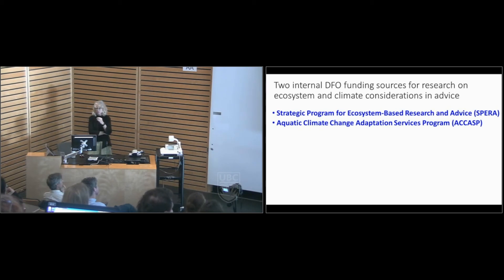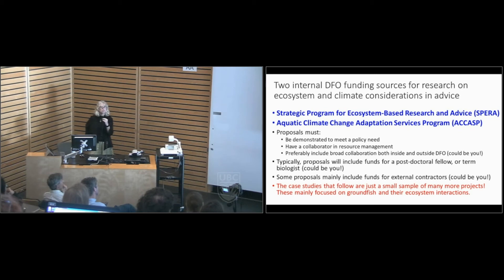So internally we have two DFO funding sources for research on ecosystem and climate considerations and advice. One is the Strategic Programme for Ecosystem-Based Research and Advice, SPERA, the other Aquatic Climate Change Adaptation Services Programme, ACCASP. And we have to write proposals just like you do and the proposals must be demonstrated to meet a policy need. If we just say we want to explore something it'll be rejected out of hand. We have to have a collaborator in resource management, it's usually Neil, got his name on an awful lot of proposals, and preferably include broad collaboration both inside and outside DFO. So we do have collaborations with people here. Typically proposals will include funds for a postdoctoral fellow or a term biologist, sometimes a student. Some proposals mainly include funds for external contractors and we do it that way. Again, a lot of those are with people here or at Simon Fraser University.